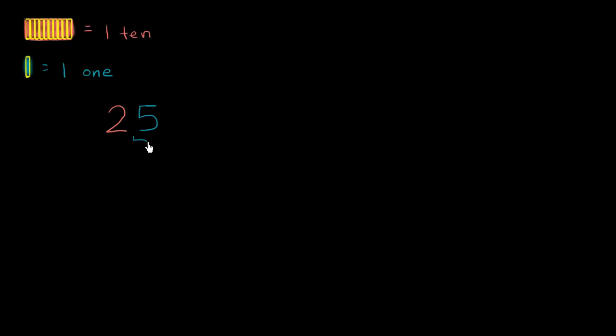Well, the five here is in the ones place, so it literally represents five ones. And this two right over here is in the tens place. Let me write that down. That's the tens place, that's the ones place. So this represents two tens.